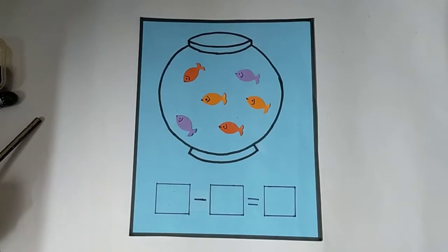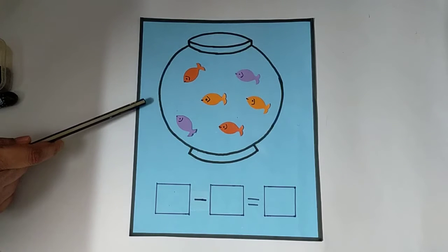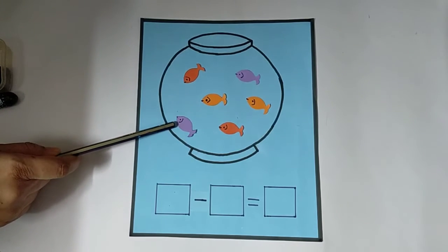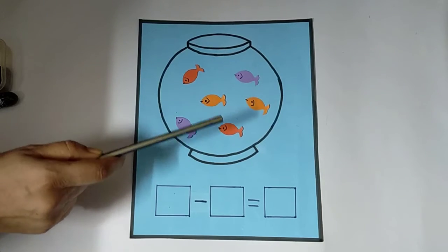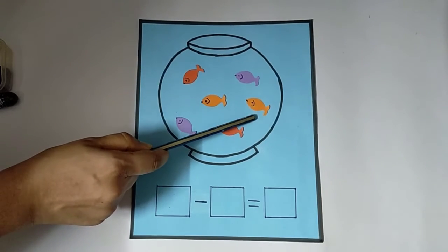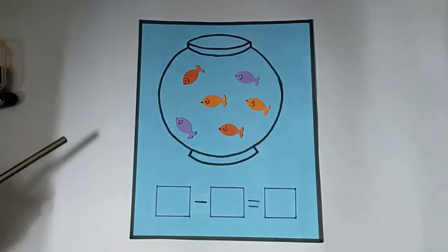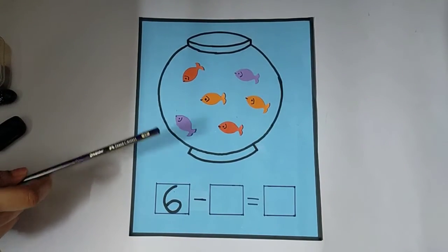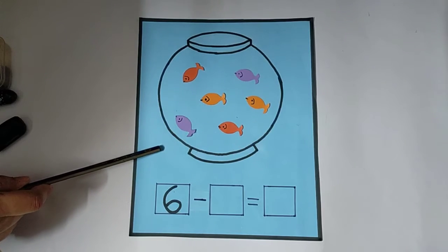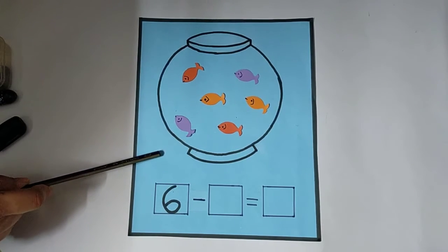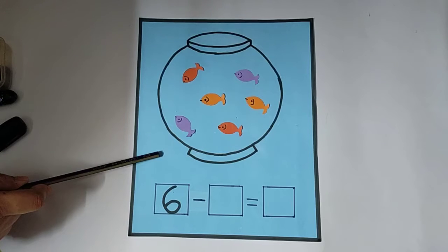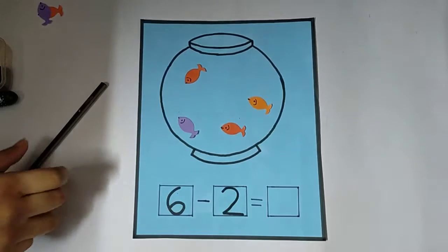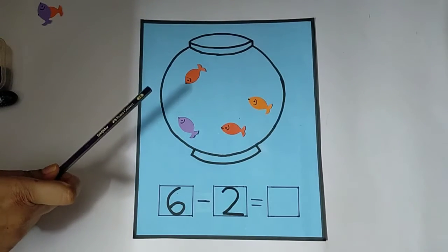Now, count the fish in the fishbowl. One, two, three, four, five, six. So, two fish decided to go to the sea to roam around. So, two fish gone away. See, two fish has gone away.